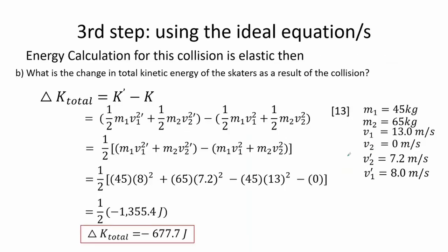For letter B, we are to find the total kinetic energy of the skaters as a result of the collision. We take the difference of the kinetic energy after minus kinetic energy before to determine this value. We see that the change in total kinetic energy is equal to negative 678 joules.